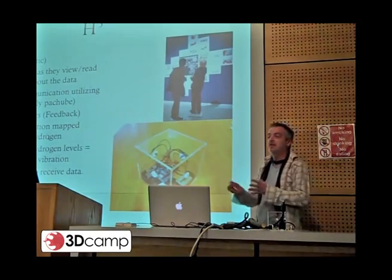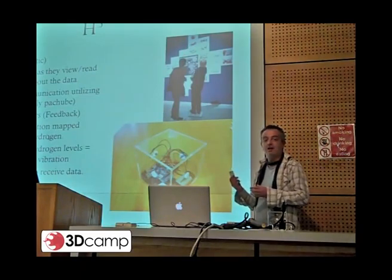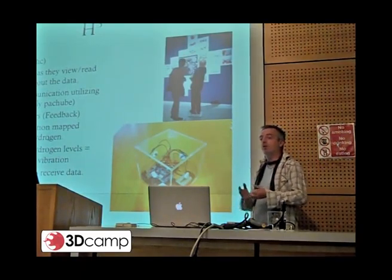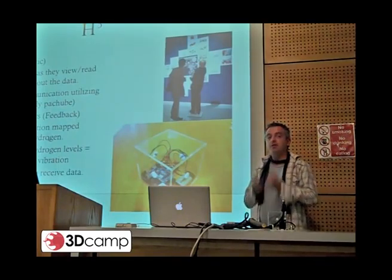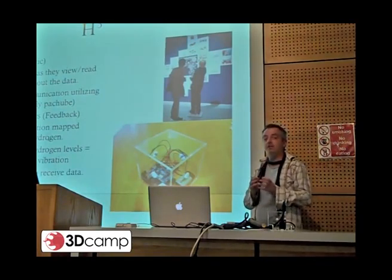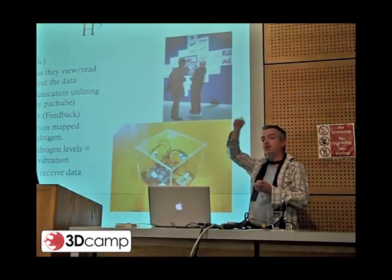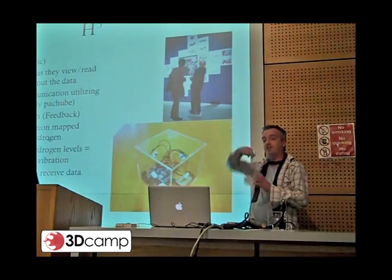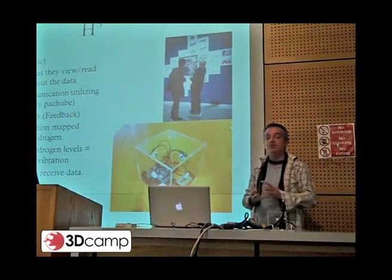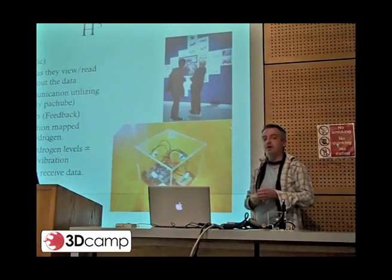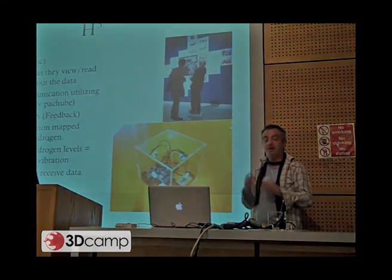This box is given to visitors of the museum at Blackrock Observatory, and as they walk around they hold it with them. When they shake it, it sends a message wirelessly to the dish to ask what the hydrogen levels are at that particular time. The dish sends back a response and the box starts to vibrate, vibrating based upon the hydrogen levels at that moment in real time.